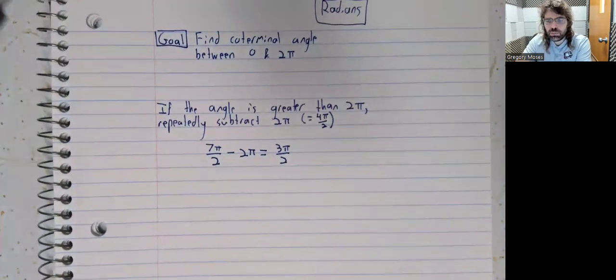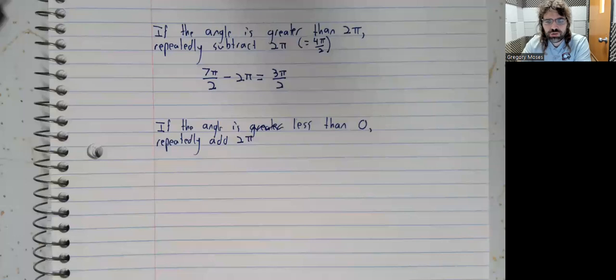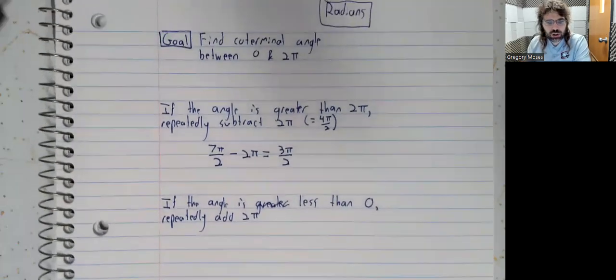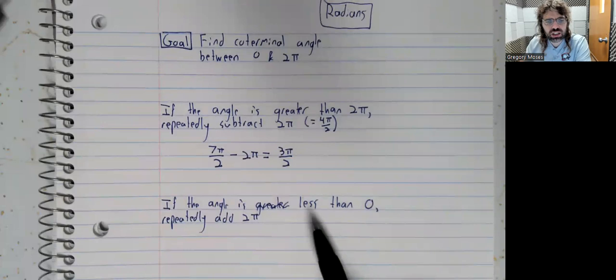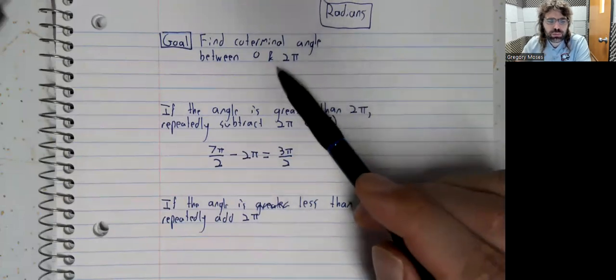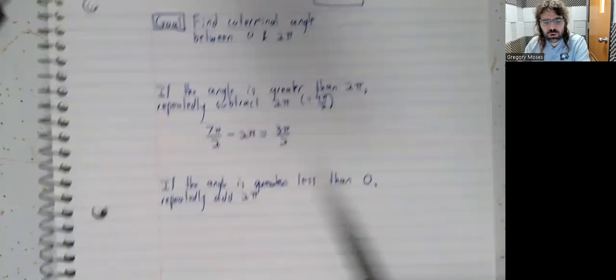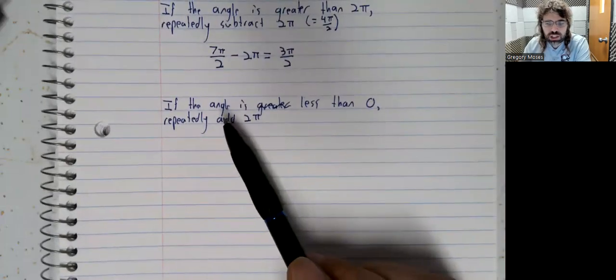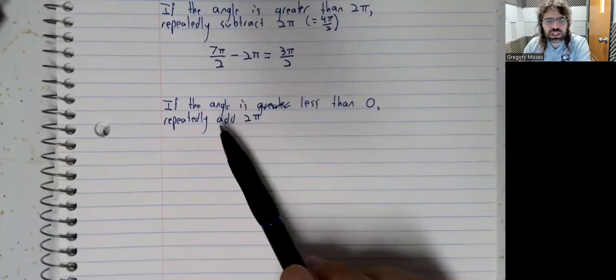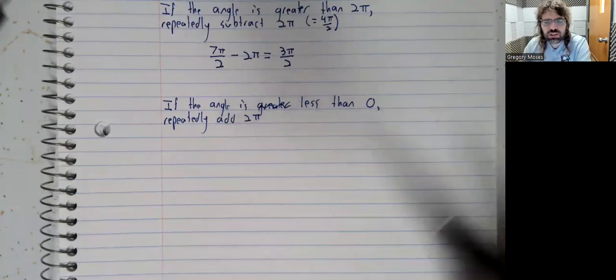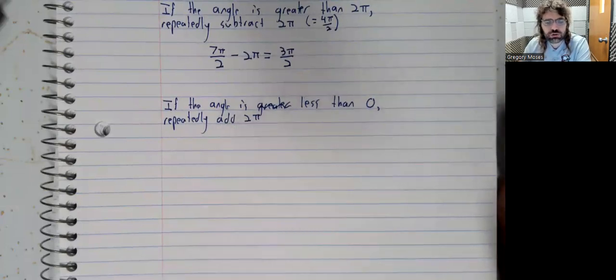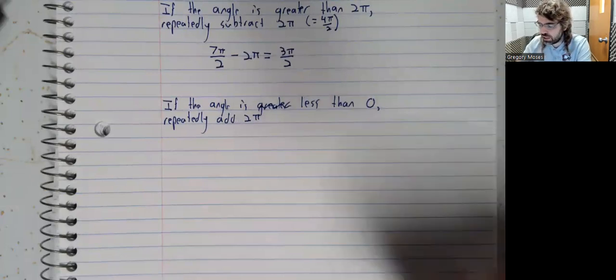So wrapping up, if we've got a negative angle, so an angle less than zero, and we want the coterminal angle in this interval, then just like we did with degrees, we repeatedly add. With degrees, it was 360. With radians, it's 2 pi radians.